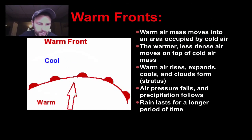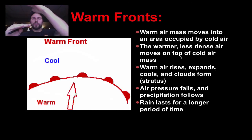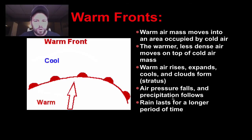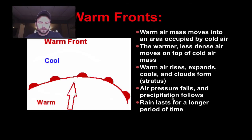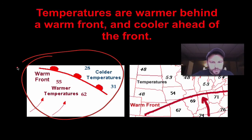Our next type of front are warm fronts — the exact opposite. These warm fronts — an air mass moves into an area occupied by colder or cooler air. The warm air is less dense and moves on top of the cold air mass, riding up over the back of it. We have rising air, rising air cools, clouds form, and precipitation follows. The rain here will last for a longer period of time. Temperatures are warmer behind a warm front.